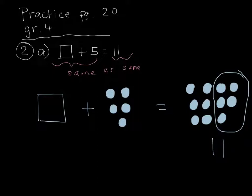So I'm going to draw in the 6 in the box now: 1, 2, 3, 4, 5, 6.